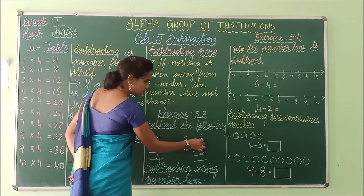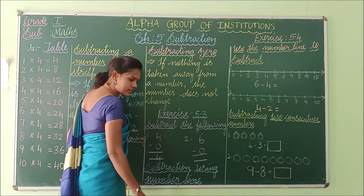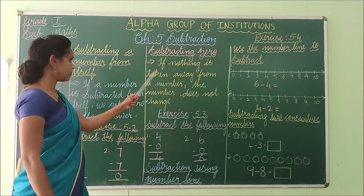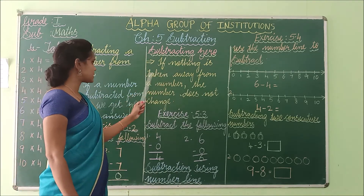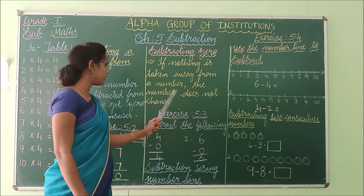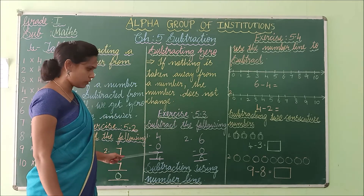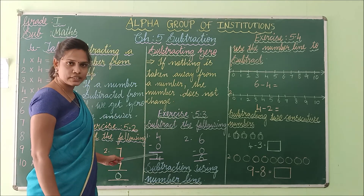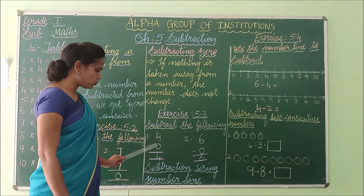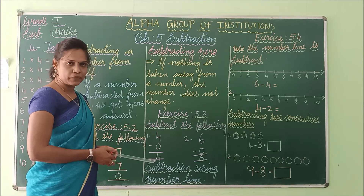See the second problem: 6 minus 0. 6 minus 0 is 6. If nothing is taken away from a number, the number does not change. Because we are subtracting the number with 0, it will be the same number.